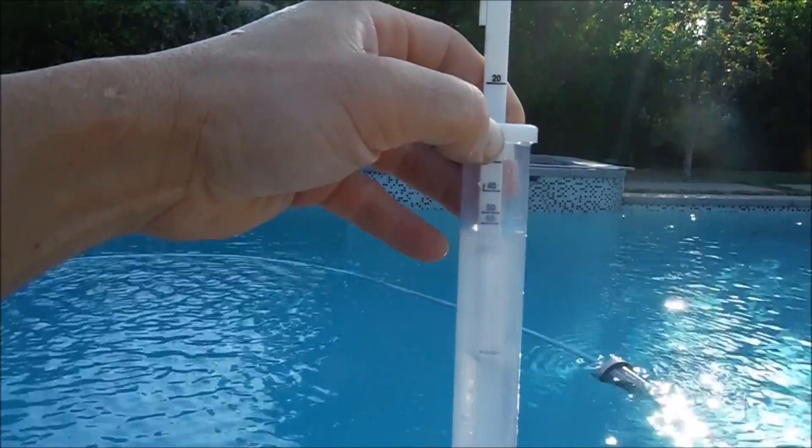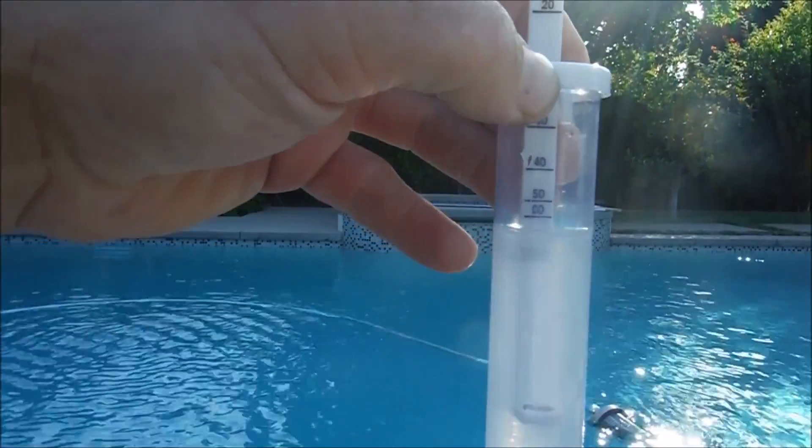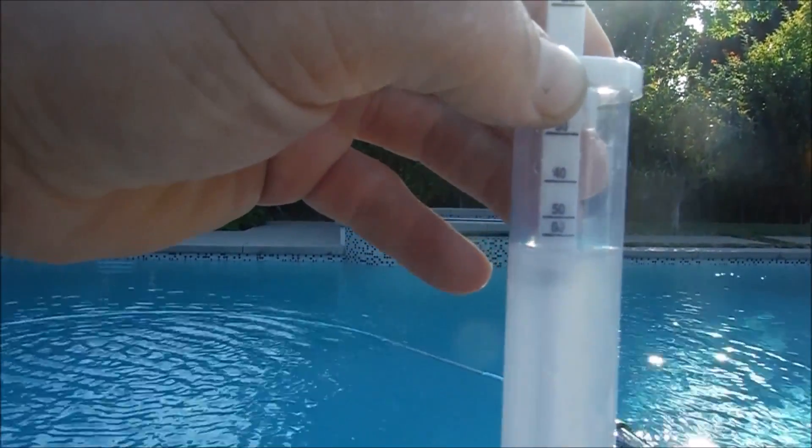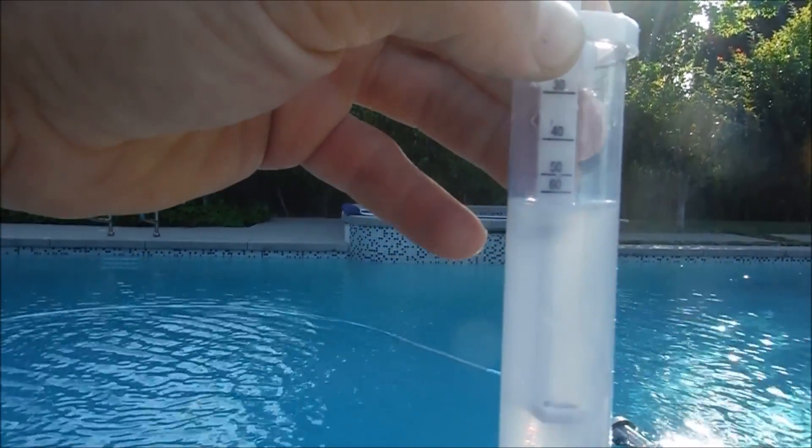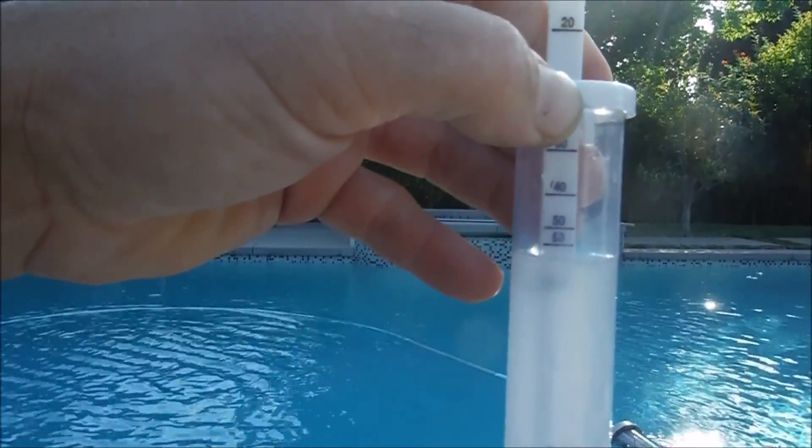Once that black dot disappears you want to look through the tester here. Look at the water level inside the tester and look at that number straight across on the water level. You can see that it's about 70. It only goes from 60 to 100. You have to kind of guess here. I'm going to say it's about 70 parts per million.